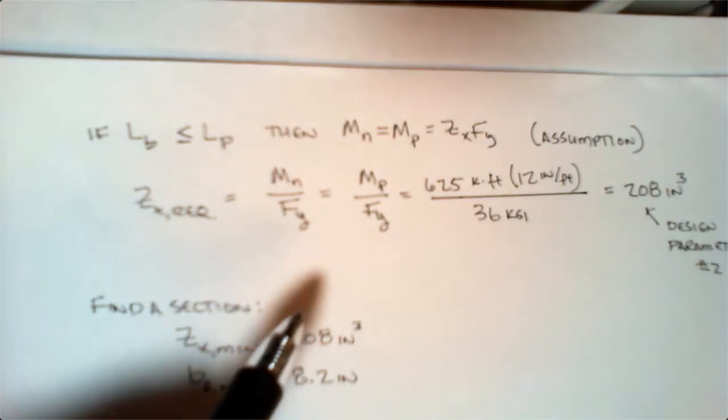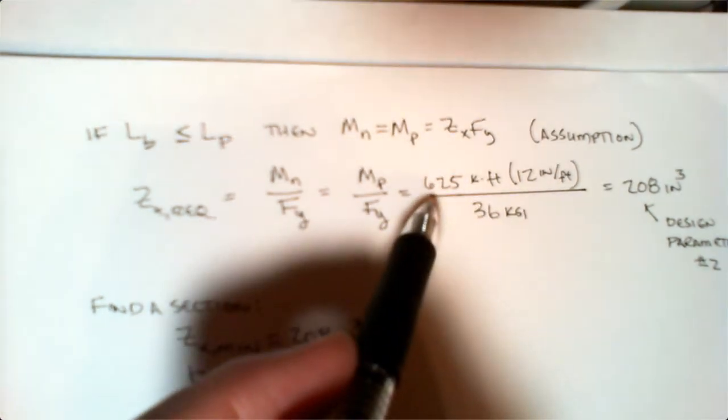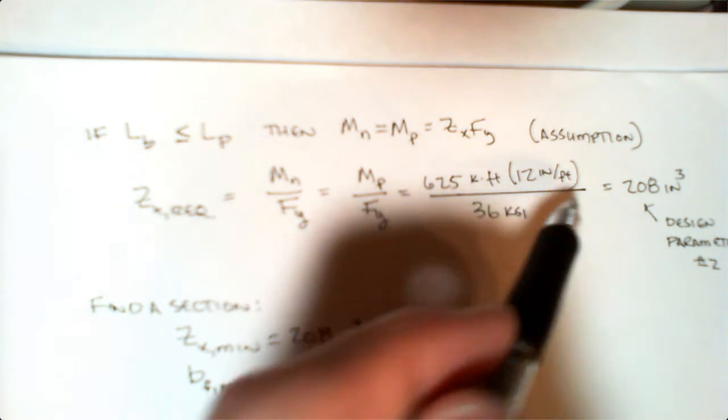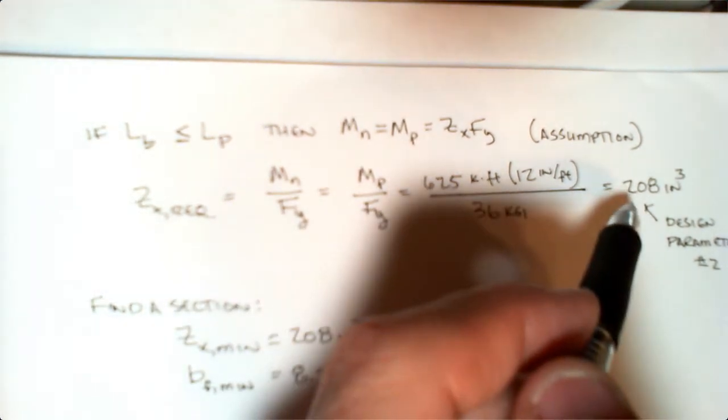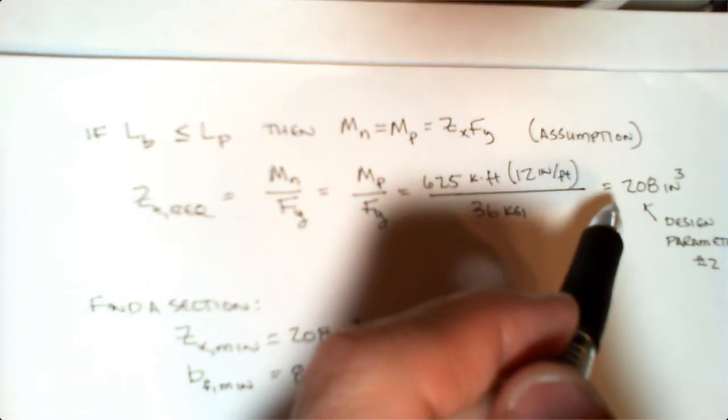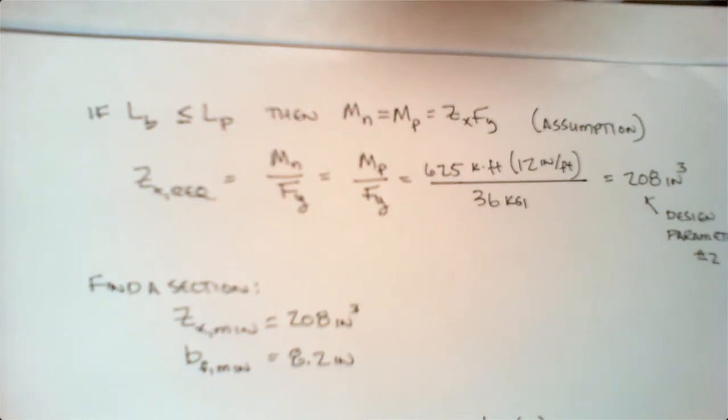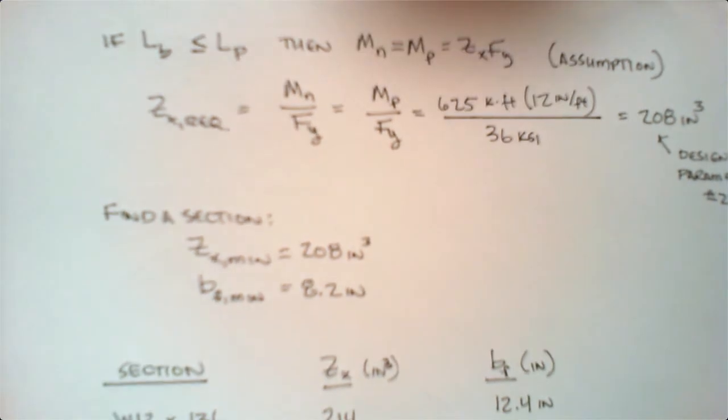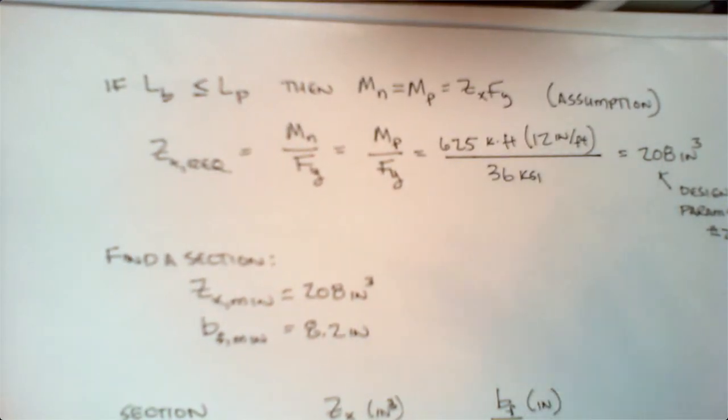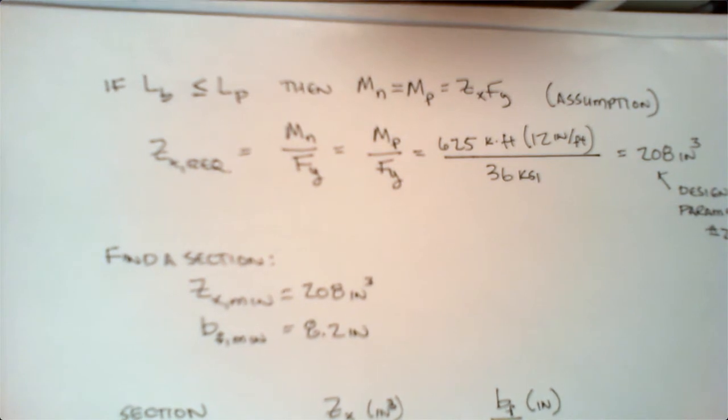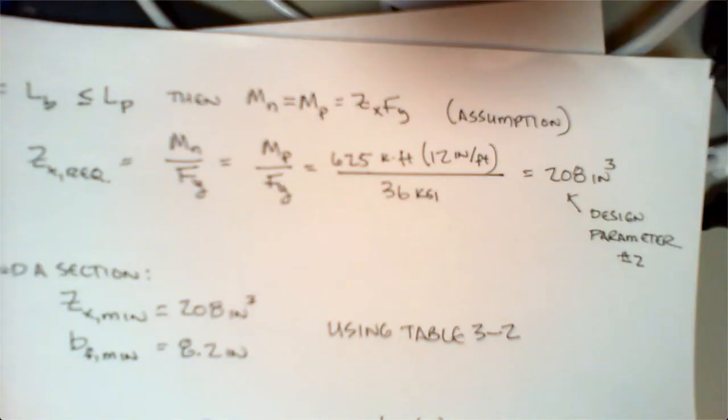Just like we did with the lambda problems in zone one, we're going to solve for our Zx required. That's just Mn over Fy. This becomes 625 kip-feet, convert to units, divide by 36 ksi, and so our minimum Zx that we can accept is 208 inches cubed.